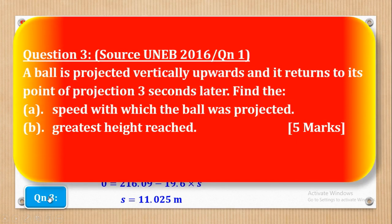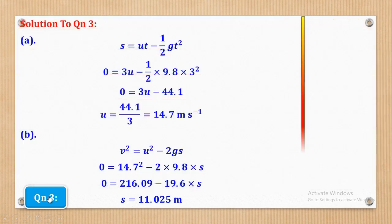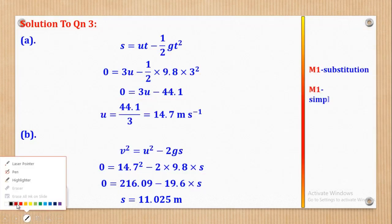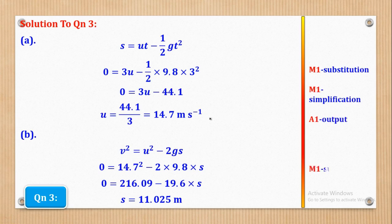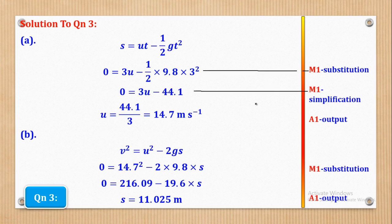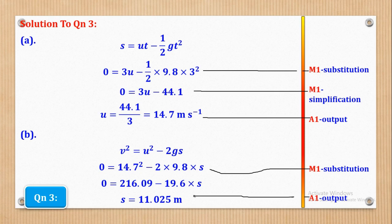For the mark scheme: M1 is for substituting in the second equation, M1 is for simplifying, and A1 is for the velocity. For part B, M1 is for substitution and A1 is for the output. That is how the 5 marks come about in question 3.